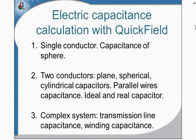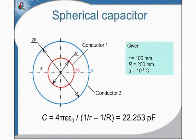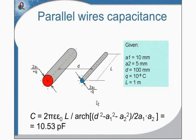We have learned how to calculate the capacitance of a single conductor and the capacitance in a system of two conductors. We know the difference between ideal and real capacitors. The next example will be the capacitance between two wires — two infinitely long wires, one with positive charge and the other with negative charge. We need to calculate the capacitance between these wires. There is an analytical solution; we will look at the simulation and compare the result we get in QuickField with the analytical solution.